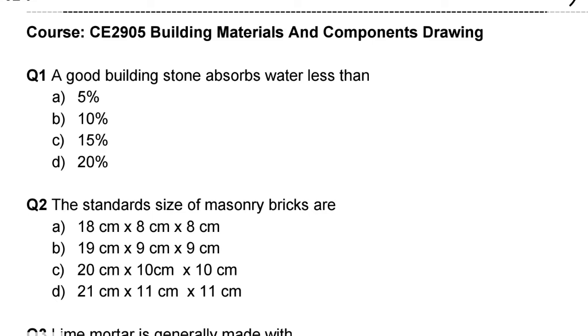The first question: a good quality building stone absorbs water less than. Option A: 5%, Option B: 10%, Option C: 15%, Option D: 20%. The correct answer is option A, 5%.